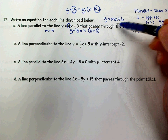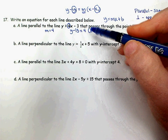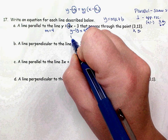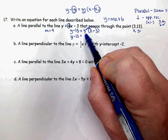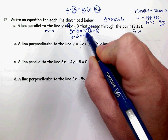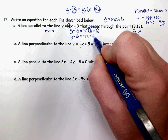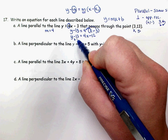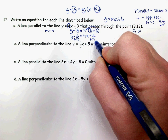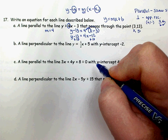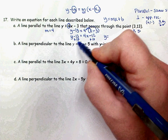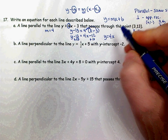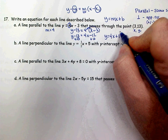To get into slope-intercept form, I need y by itself, but first I need to get rid of these parentheses by distributing the 4. So I have y minus 13 equals 4x, and then 4 times negative 3, which is negative 12. To get y by itself, I undo the subtracting of 13 by adding 13 to both sides, adding it to the constant. My equation is y equals 4x, and the y-intercept is negative 12 plus 13, which is plus 1.